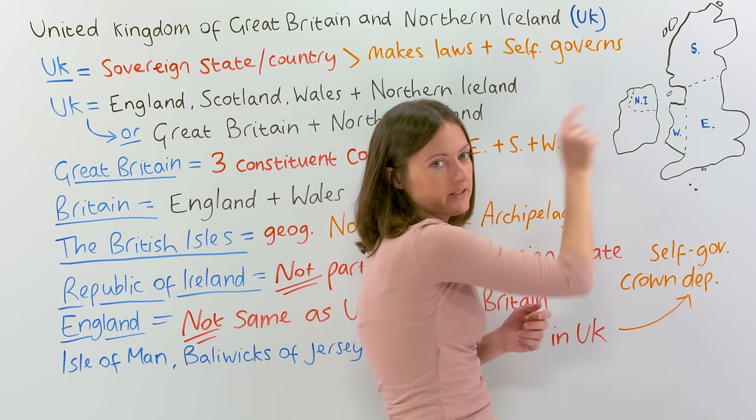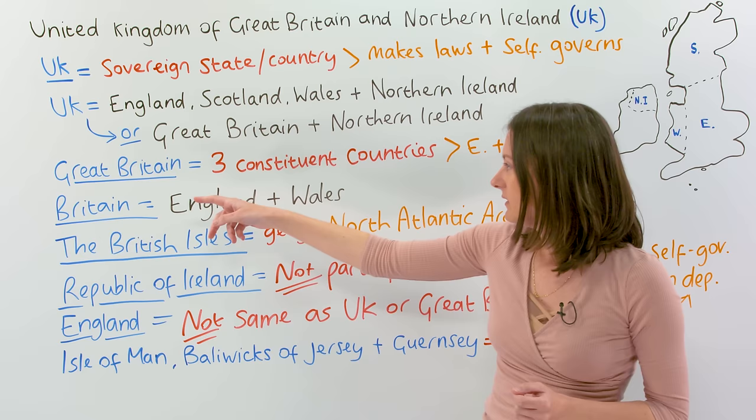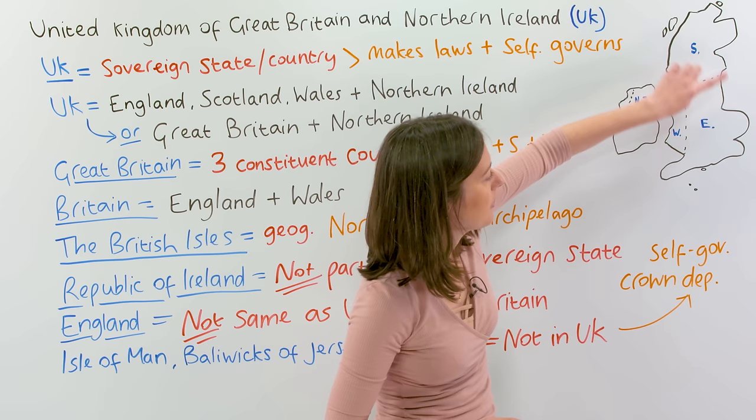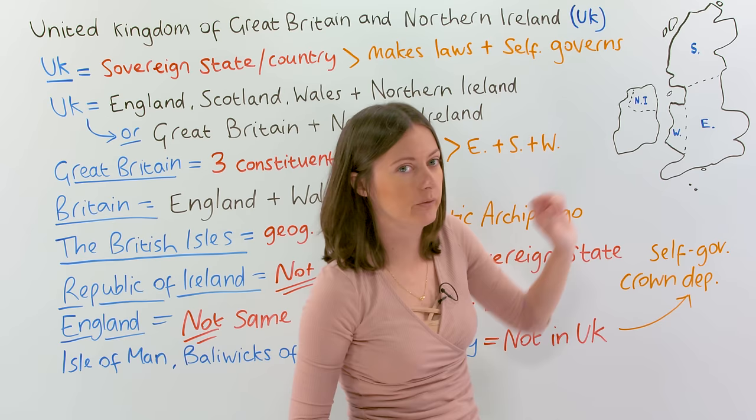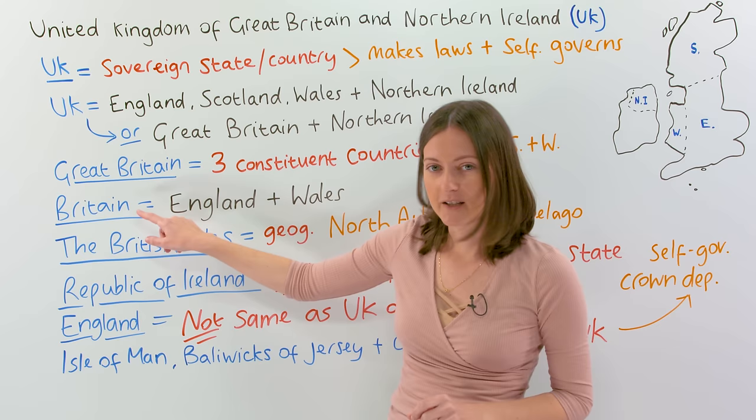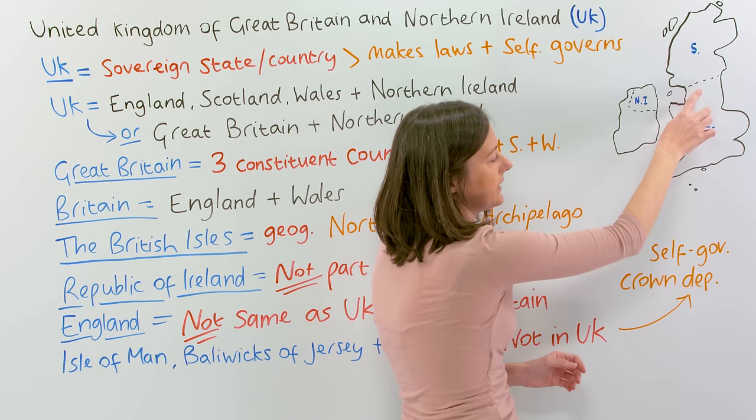And Northern Ireland is part of the landmass — the island of Ireland. So if we put this bit and this bit together, we get the United Kingdom. Great Britain has three constituent countries: Scotland, England, and Wales make up Great Britain. Britain — now we're getting smaller — this is Britain: England and Wales.